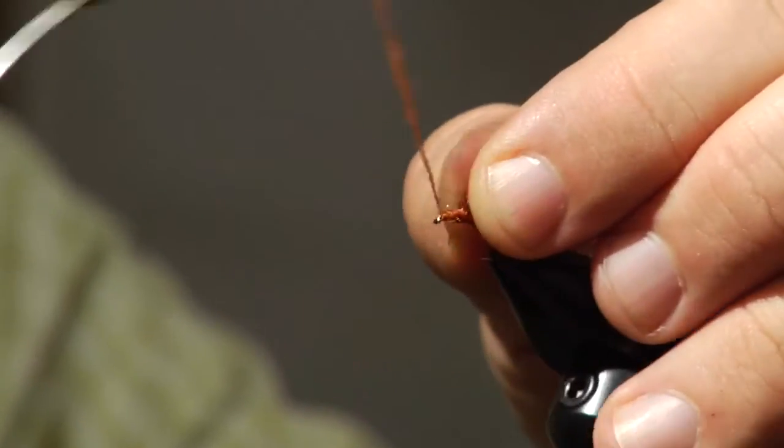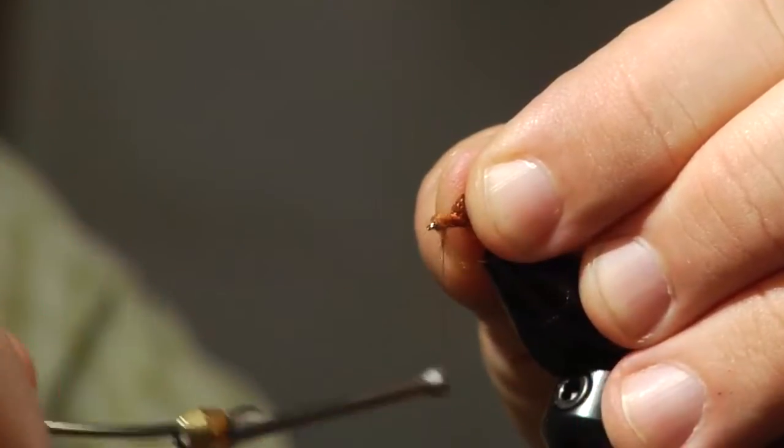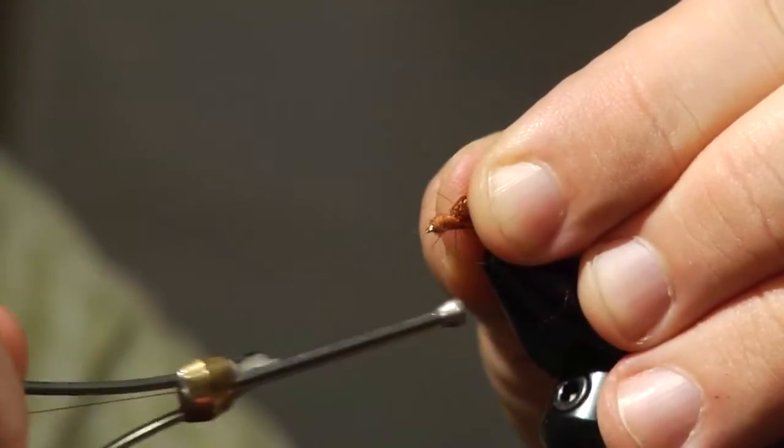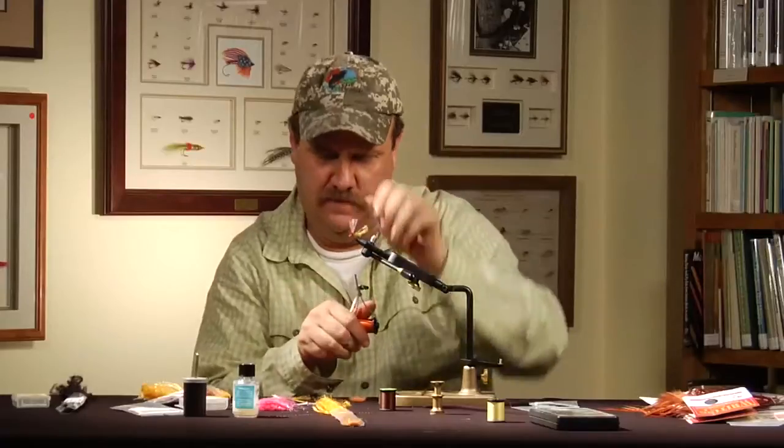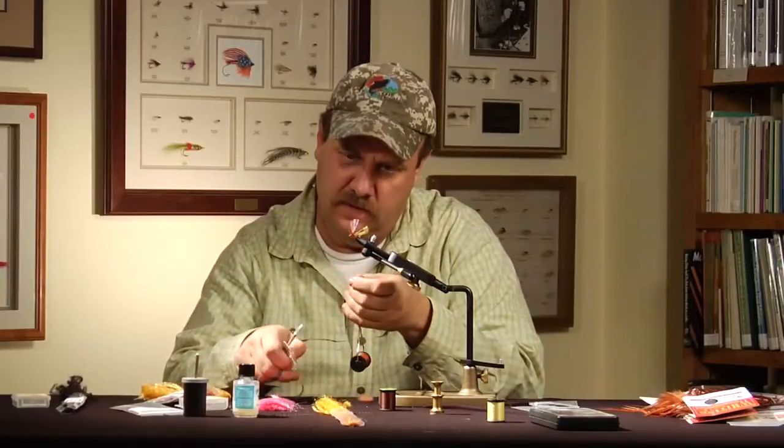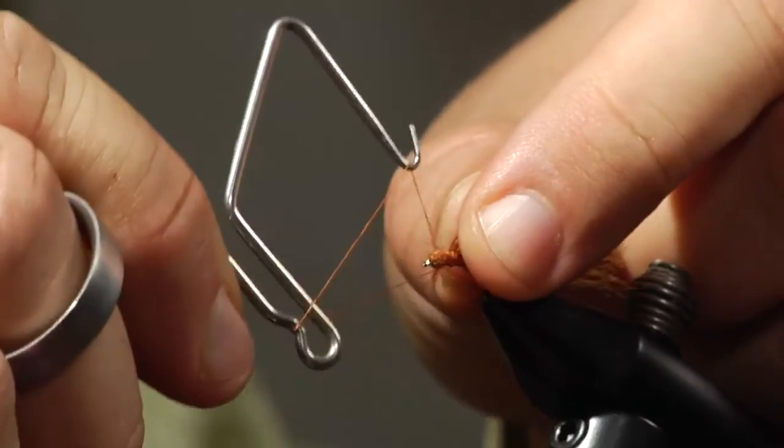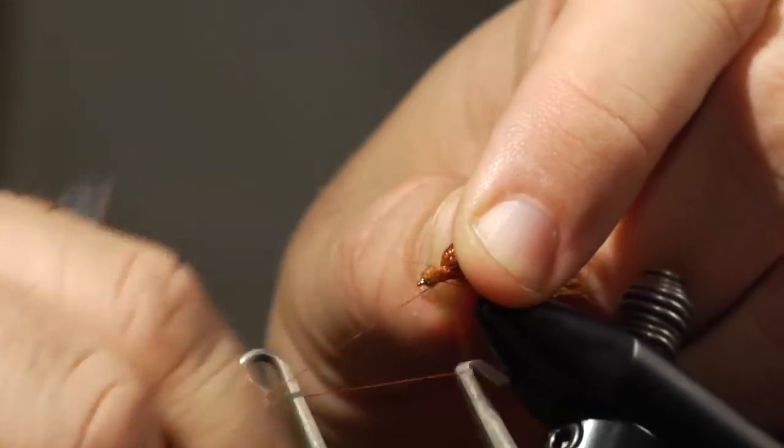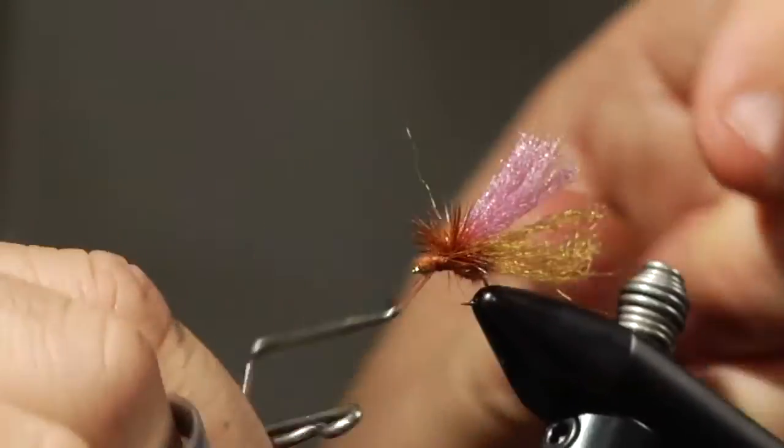I'm going to start right behind the eye here. I'm just going to build up a little head and I'm going to come right back to where I tied off the hackle. I'm going to grab my whip finisher. I'm going to pull that all out of the way and I'm going to whip from the back to the front and tie off right behind the head there.